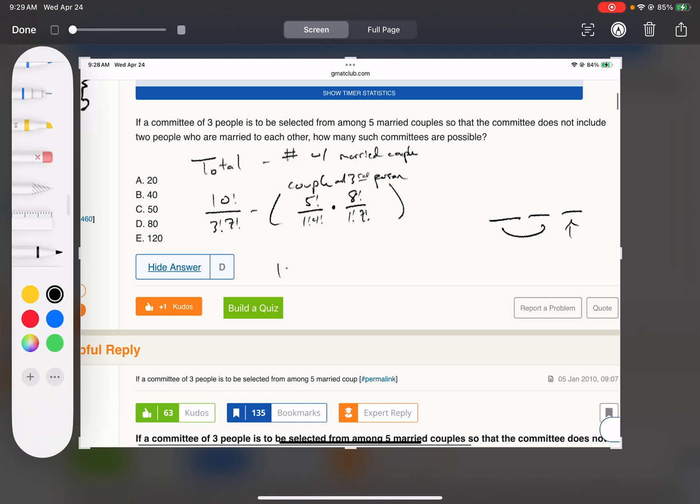So then I just do this math. 120 minus 5 choose 1 is just 5, 8 choose 1 is just 8, so 120 minus 40 gives me 80.